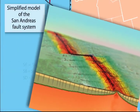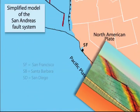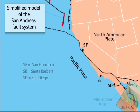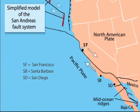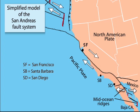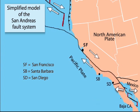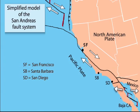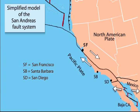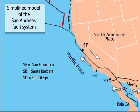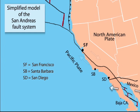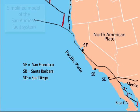Backing out to map view, we see the simplified San Andreas fault system cutting through California. As the movement of the plates continues along this plate boundary, it is forcing Baja California away from Mexico and causing Santa Barbara and San Diego to migrate northward towards San Francisco.